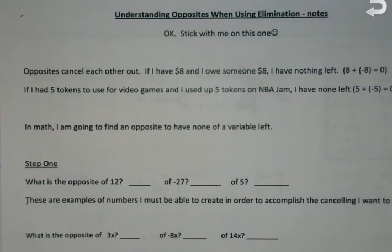I've got 8 bucks and I owe somebody 8 bucks. I really don't have anything because I've got positive 8 for me and negative 8 that I owe somebody. I've got nothing. Or if I had 5 tokens and I used up 5 tokens on a game, I don't have any left. That's actually how this whole elimination thing works, basically.